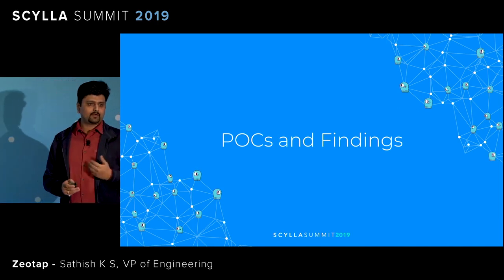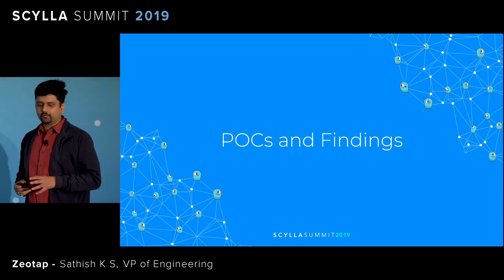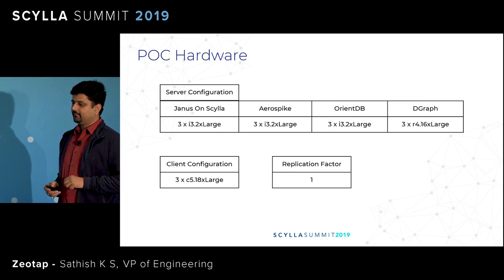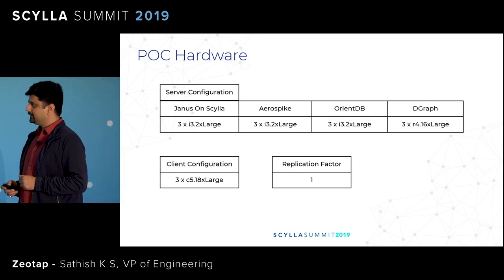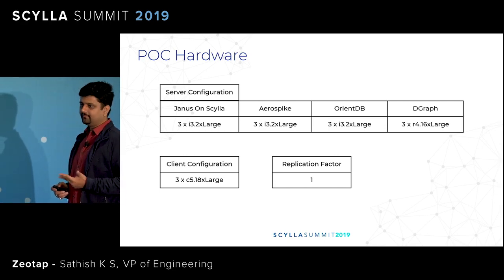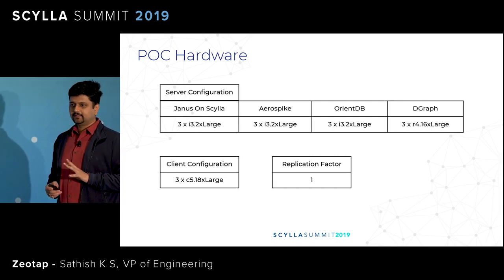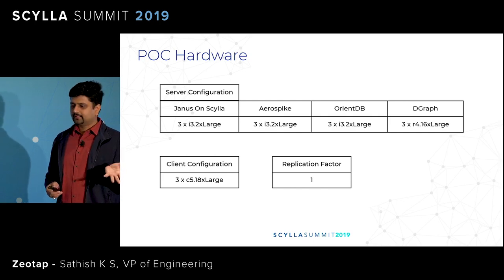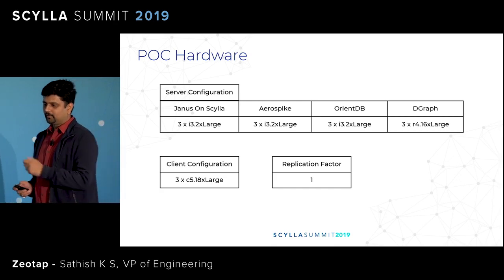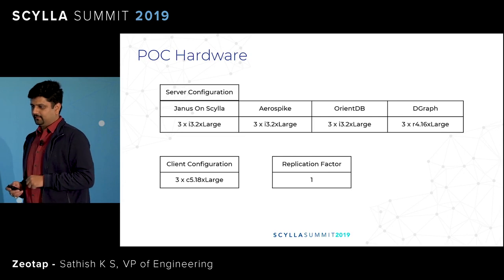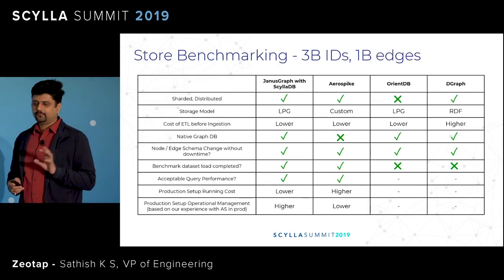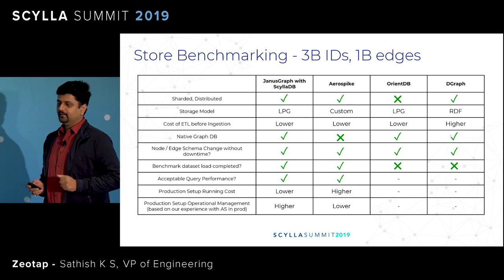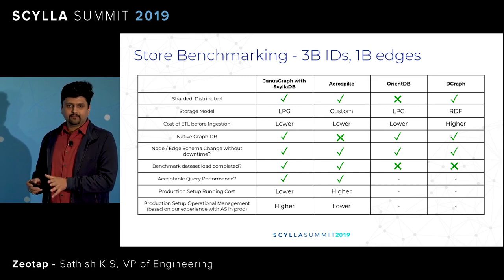Let's move on to the POCs and findings — what were our data store candidates and benchmark data volumes and access patterns. We did a POC in August 2018 for a couple of openly available graph databases. We POC'd three native graph databases: JanusGraph backed by Scylla, OrientDB, and DGraph. Given our scale, we were suspicious that none of these stores may directly enable us to achieve what we want, so we also had a plan B: implement the entire DFS algorithm via UDF facility in Aerospike, which we knew would work because of our production experience with Aerospike. Our aim was to test the workload at least 3x of the existing workload, which meant we tried with 3 billion vertices and 1 billion edges. We are right now 15 billion plus — that's the current state.